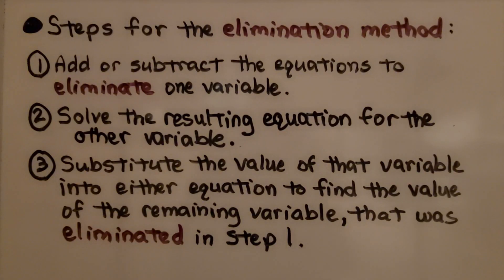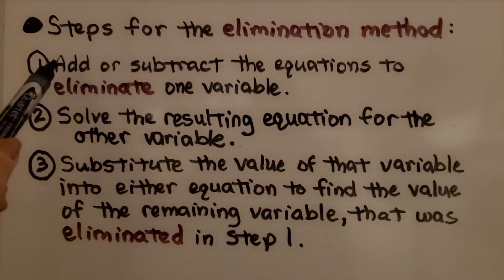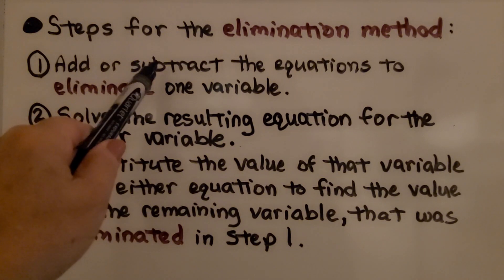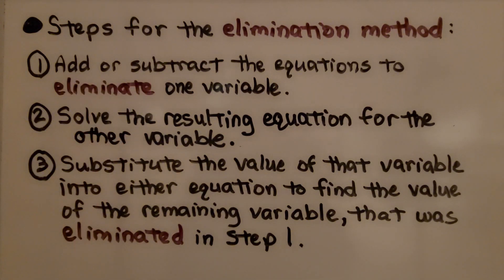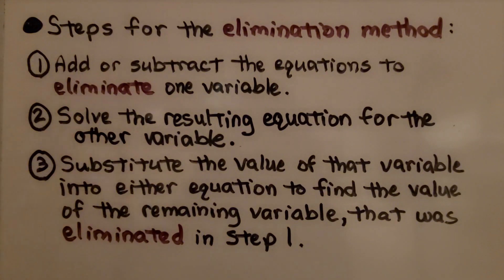Here are the steps for the elimination method. We add or subtract the equations to eliminate one variable — we add if the variable terms are opposites, and we subtract if they have the same variable term. Second, we solve the resulting equation for the other variable. Then we substitute that value into either equation to find the value of the variable that was eliminated in step one.